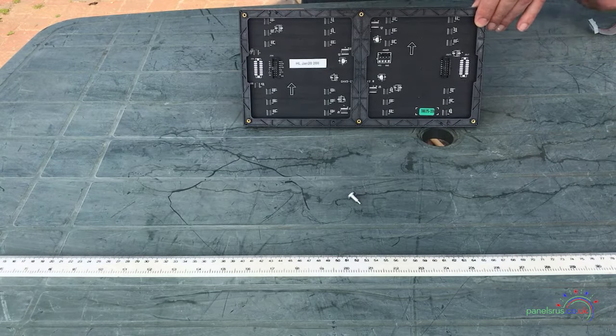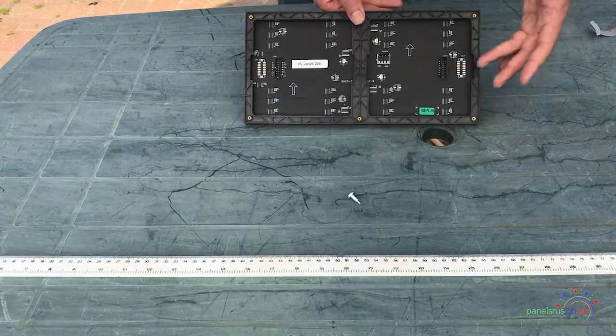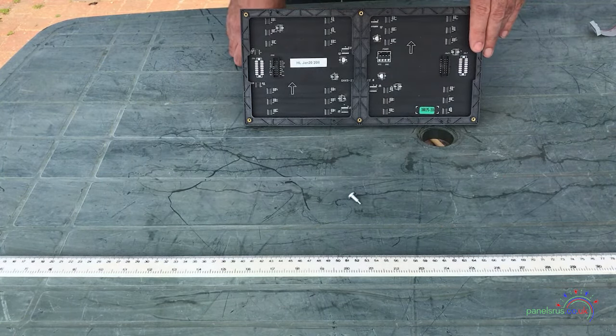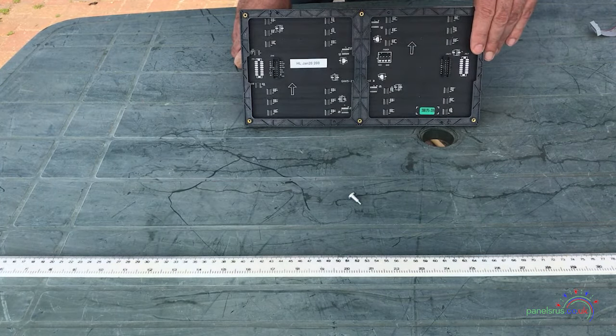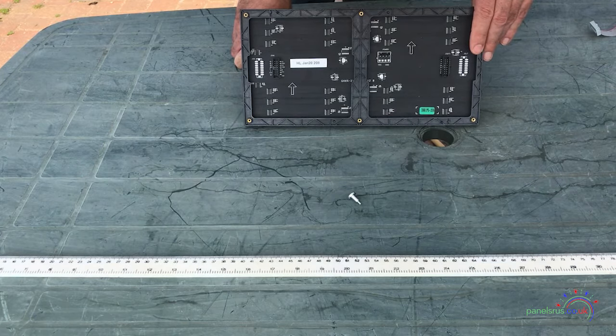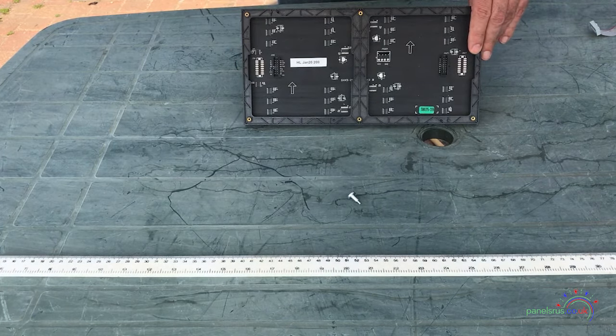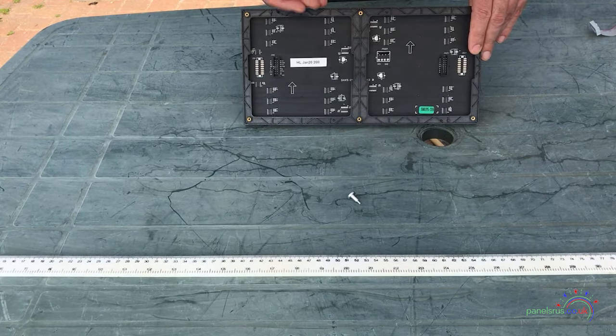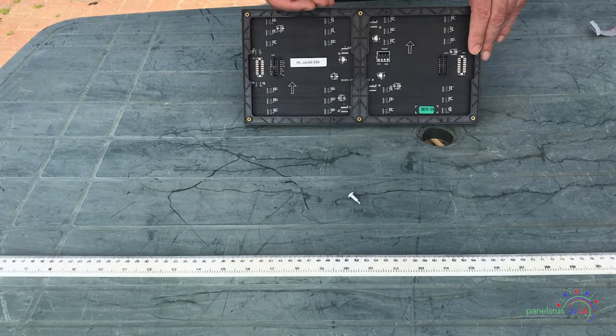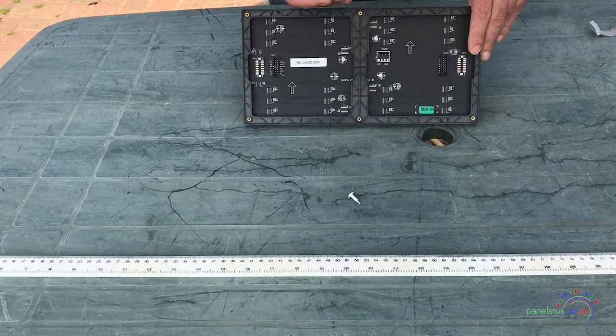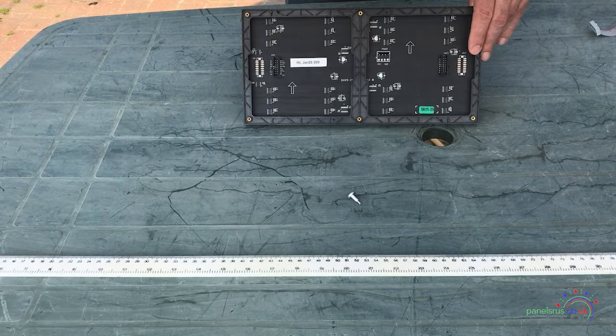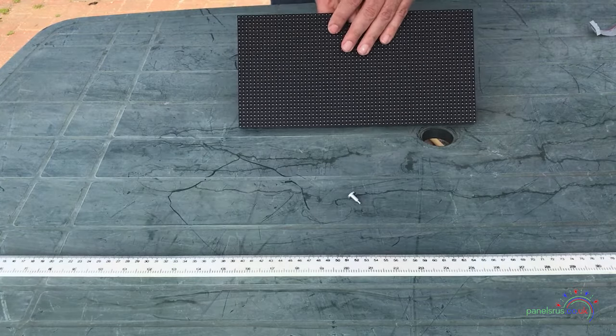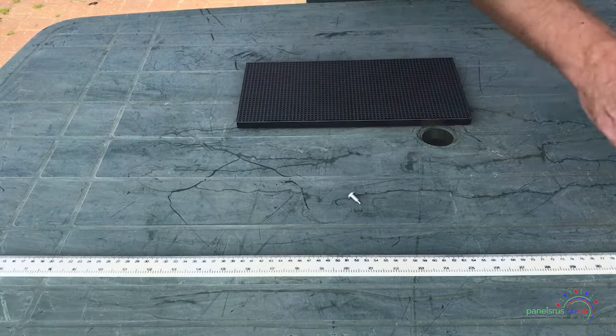Now moving on to connectivity you can see we've got a data in and a data out so these are designed to be connected in chains of up to eight panels. Now dependent on the controller that number may vary. The maximum, the biggest controller that we do, the ColorLight, will support eight chains of up to eight panels or up to 64 on one card and it is possible then with the ColorLight to daisy chain cards so you could have hundreds of panels in a single display if you wanted to.